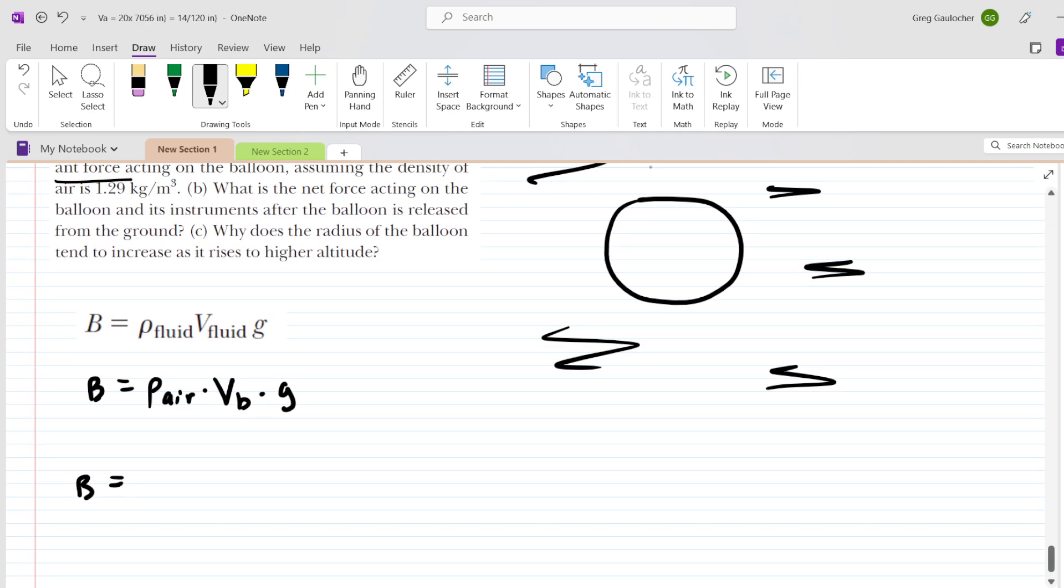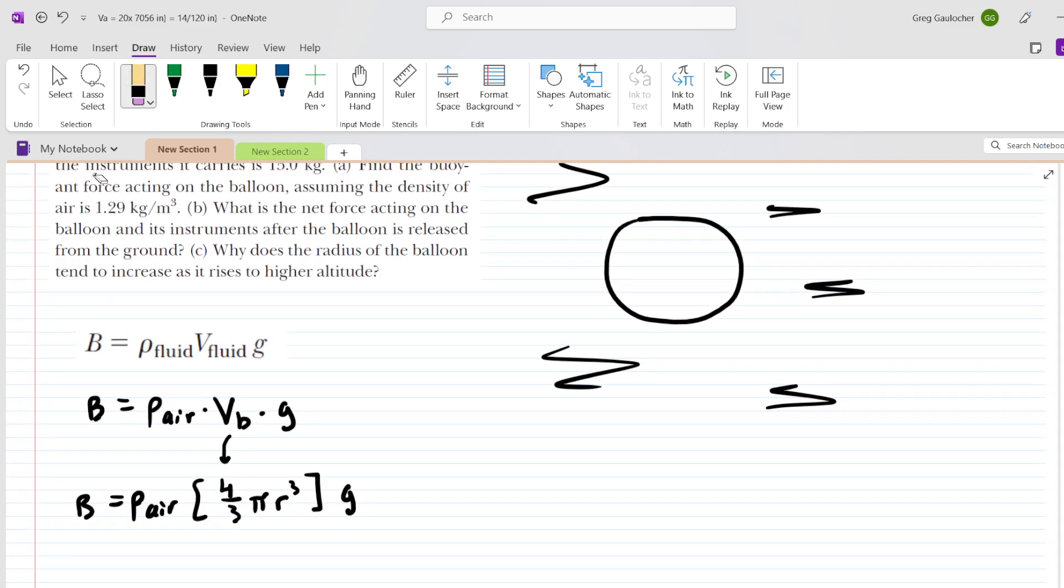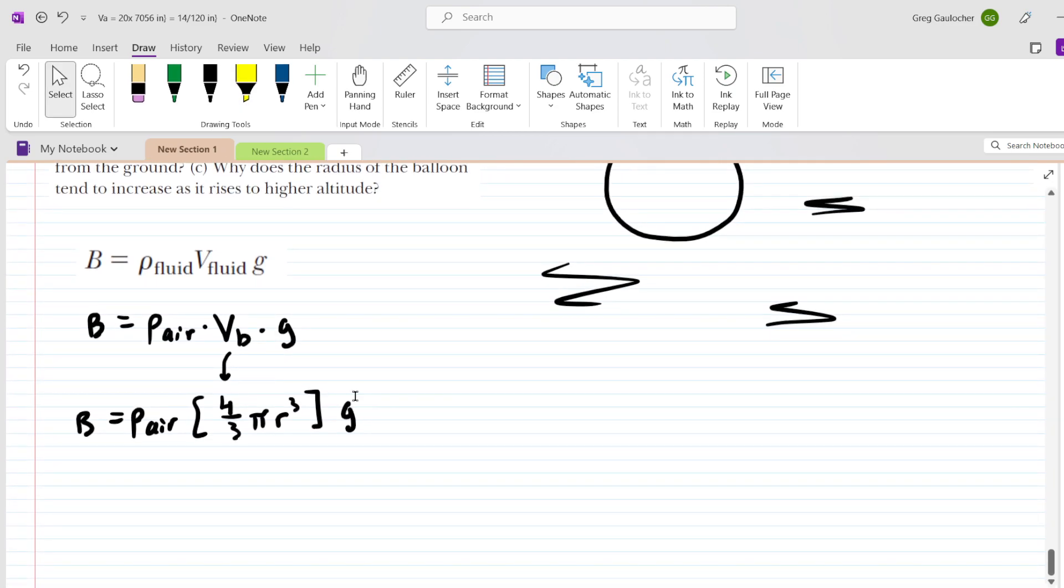The balloon is a sphere, so we're going to take the volume term and replace it with the volume of a sphere, which is four-thirds times pi times radius cubed. This is our setup, and the question gives us the density of the air, this value right here, and then it also gives us the radius of the balloon, and little g is 9.8 meters per second squared.